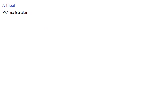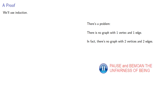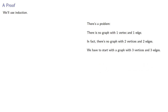And so we'll use induction. There's one problem: there's no graph with one vertex and one edge, and in fact there's no graph with two vertices and two edges. We have to start with a graph with three vertices and three edges. That's not a real problem, but it will require us to do some additional steps later on. There's only one graph with three vertices and three edges, and it contains a cycle.